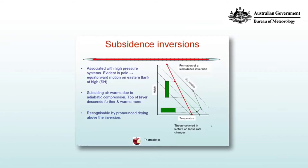In this video we examine subsidence inversions. These are inversions that form by subsiding air which warms due to adiabatic compression. The top of a subsiding layer warms more than the bottom of the layer because it descends further, and that's illustrated in the schematic on the right hand side.